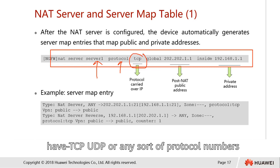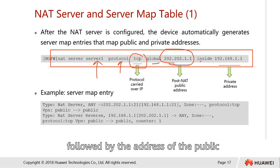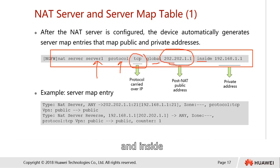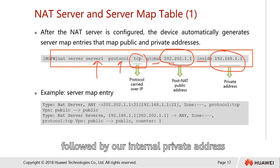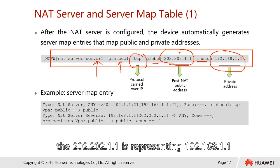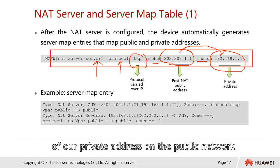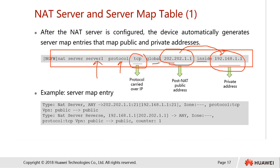Then, followed by 'global', which refers to the public address, followed by the public address value. Then 'inside', followed by our internal private address. So in other words, 202.202.1.1 represents 192.168.1.1, and it acts as the identity of our private address on the public network.